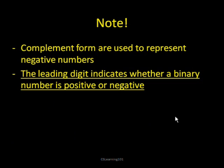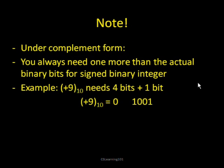Now we have some notes. Remember, the complement forms are used to represent negative numbers, and the leading digit always indicates whether a binary number is positive or negative. Under the complement form, you always need 1 more bit than the actual binary bits you're using for the number, because one of those digits has to represent the sign. Therefore, the number of values you can represent as a signed binary is usually less than with unsigned binary.